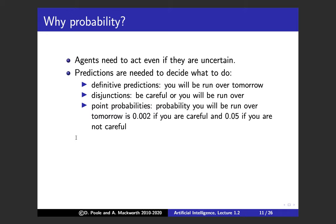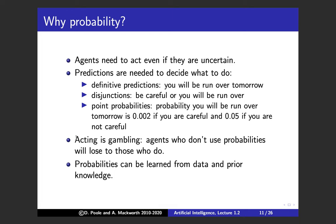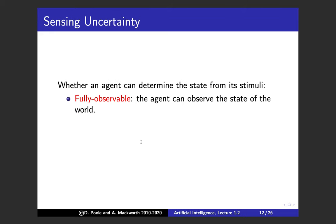It's more useful to know, for example, that the probability of being run over is 0.002 if you're careful and 0.05 if you're not. Two main reasons probability matters: first, acting is gambling — whenever you act under uncertainty you're gambling, and agents who don't use probability will lose to those who do. Second, probabilities can be learned from data and prior knowledge. Probability is the calculus of gambling and will underlie the last half of this course.